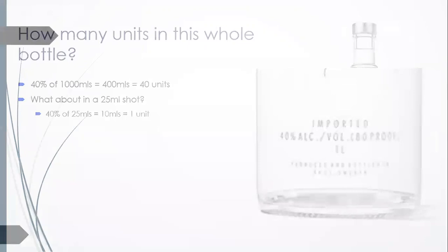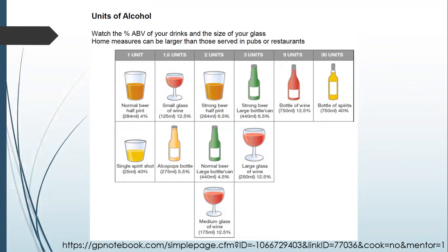We don't always need to calculate the units ourselves — the packaging of the bottle will usually tell you how many units are in that can or bottle. There are also many guides that give approximate units for common drinks like strong beer or wine. As a standard guide, a bottle of wine typically contains 9 units if it's 12.5%, and a half pint of normal beer at 4% is about one unit. Using this table, if someone tells you they drink three bottles of wine a week, that's three times nine, which is 27 units of alcohol per week.